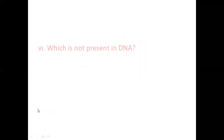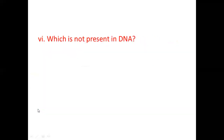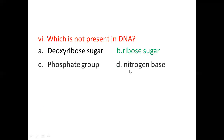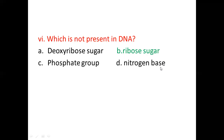Number six: which is not present in DNA? DNA is composed of deoxyribose sugar, phosphate group, and nitrogenous bases. Ribose sugar is not present in DNA — ribose sugar is present in RNA.